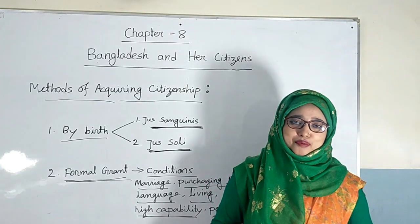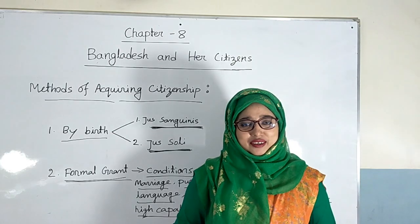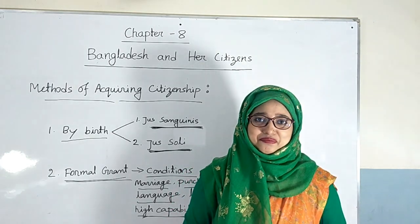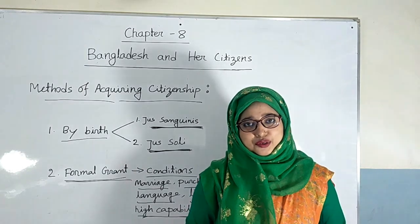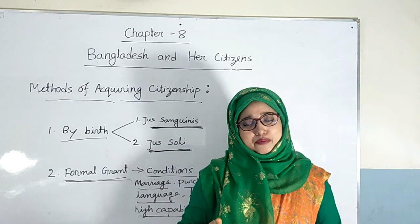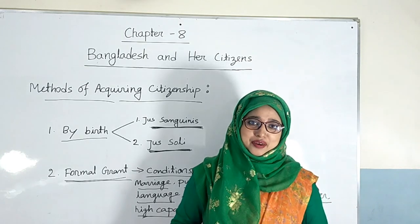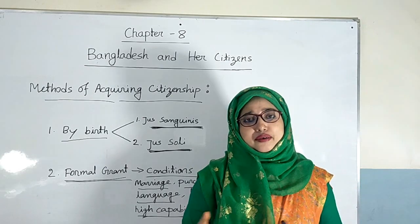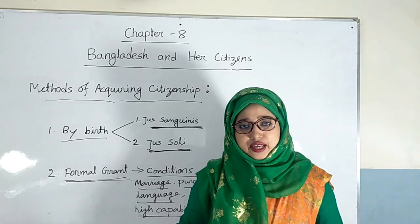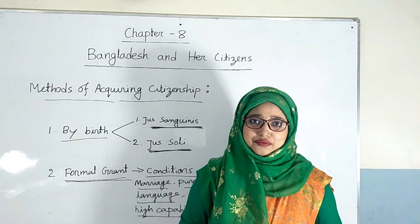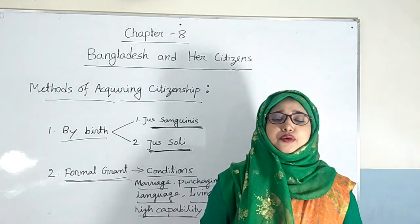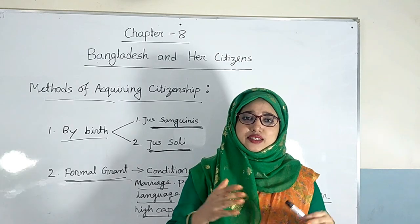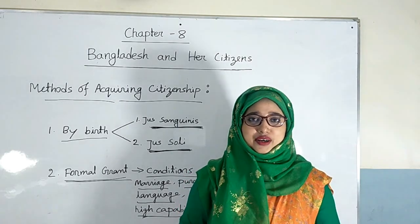What have you learnt from here? I have discussed citizen and the ways of getting citizenship. There are two ways to get citizenship: number one, by birth, and number two, by the formal method. There are two ways to get citizenship by birth: number one, Jus Sanguinis, and number two, Jus Soli. And there are several conditions to get citizenship by the formal method.